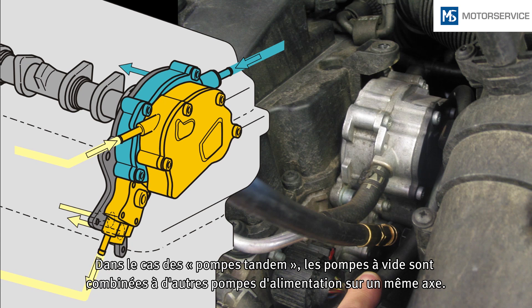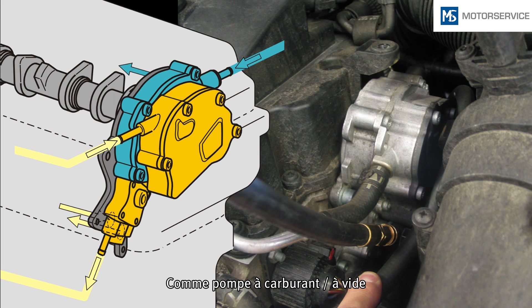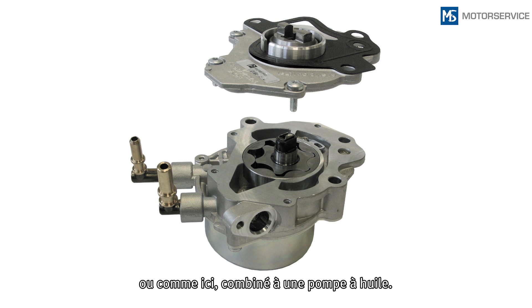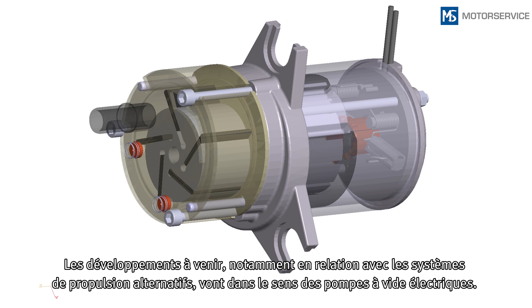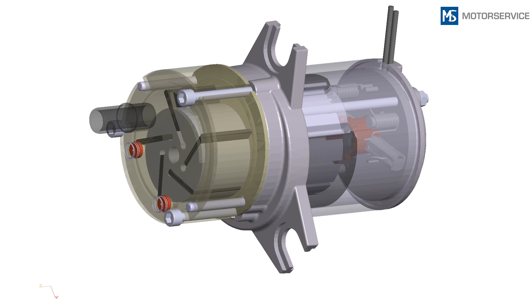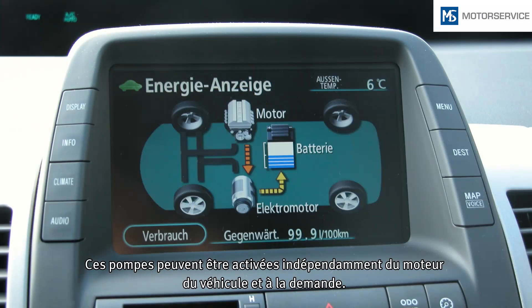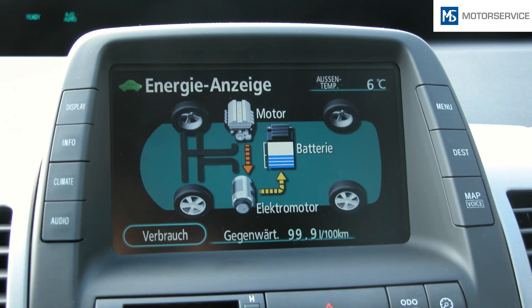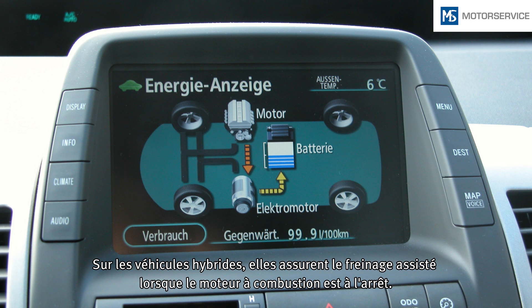In so-called tandem pumps, vacuum pumps are combined with other supply pumps on a common axle — as a fuel vacuum pump or, as here, in combination with an oil pump. Future developments, especially where alternative drive systems are concerned, are increasingly in favour of electric vacuum pumps. They can be switched independently of the vehicle engine and on demand. In hybrid vehicles, they maintain braking assistance when the engine is off.